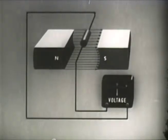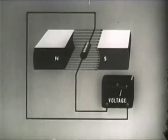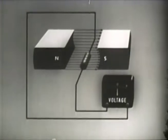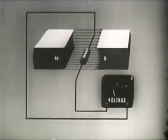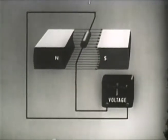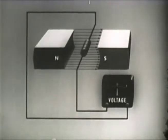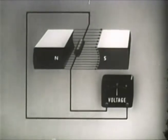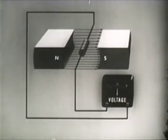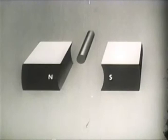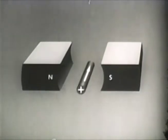Moving the conductor down through the field makes the needle of a voltmeter deflect one way, which means the EMF has one direction. Moving the conductor up through the field produces the opposite deflection of the needle — the EMF has now changed direction. Moving the conductor back and forth with the field does not make the needle deflect; there is no EMF because the conductor is not cutting the field. To illustrate the direction of current flow, the conventional symbols will be used: current flowing in a conductor away from us is represented by a cross, toward us by a dot.